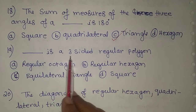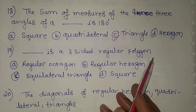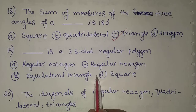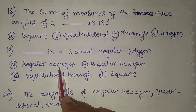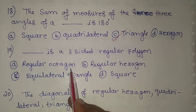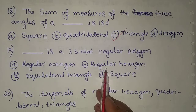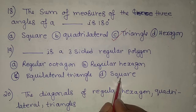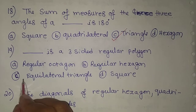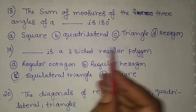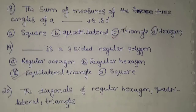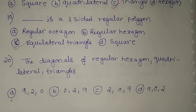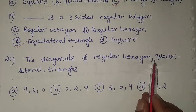The 19th problem: a blank is a three-sided regular polygon. Since three-sided is given, the options are regular octagon, regular hexagon, equilateral triangle, and square. The answer is equilateral triangle, as it has three sides. Option C is the correct answer.